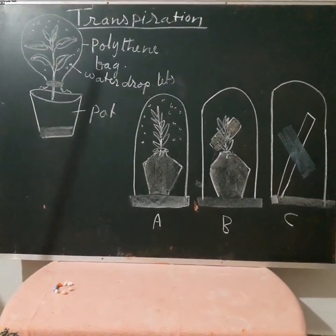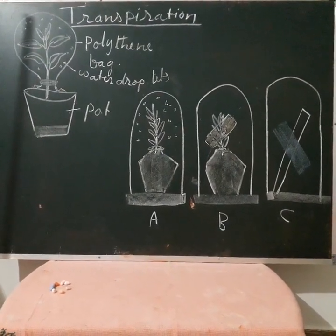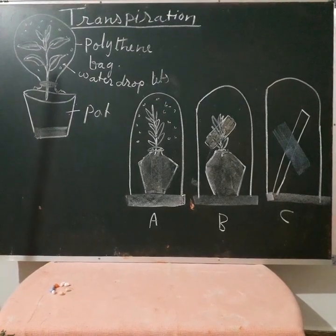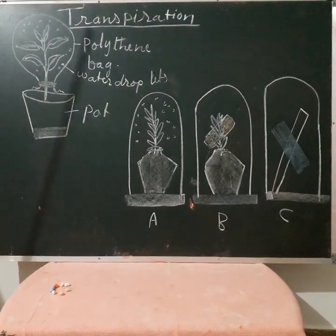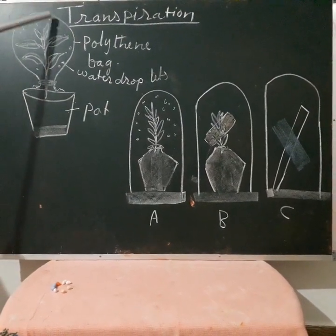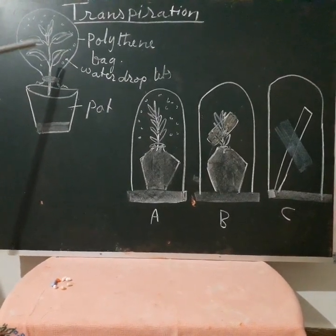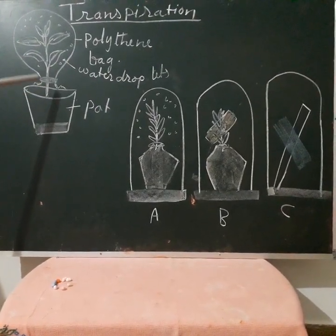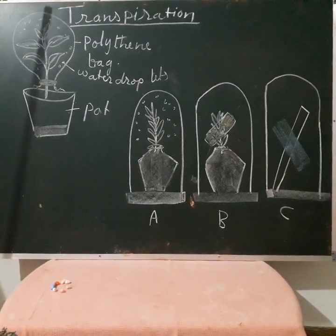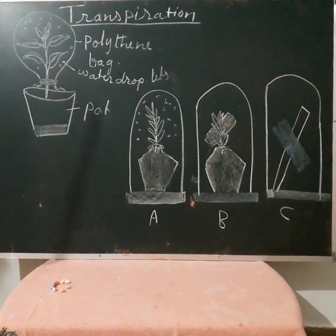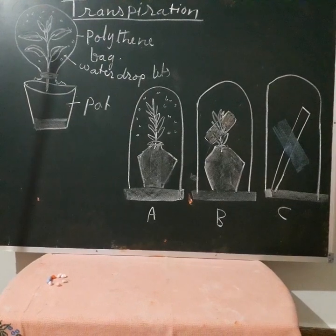In a big plant, you can imagine how much water vapor is lost through transpiration. But since it is in the form of vapor, we cannot see it, though we can demonstrate it through this experiment. You can even do this at home — just take a well-watered potted plant, cover it with a plastic bag, tie its mouth at the base of the stem, and leave it in sunlight. You will get the same result.